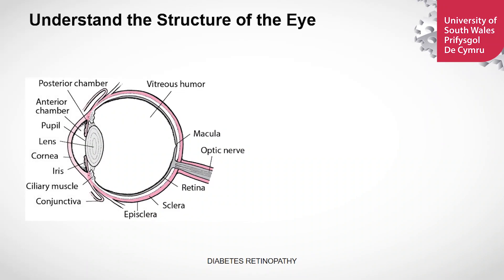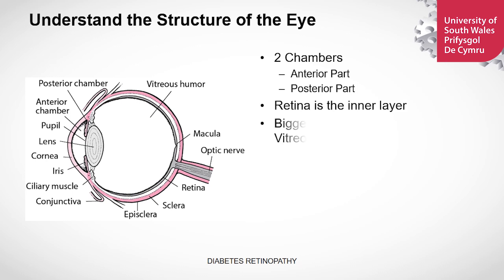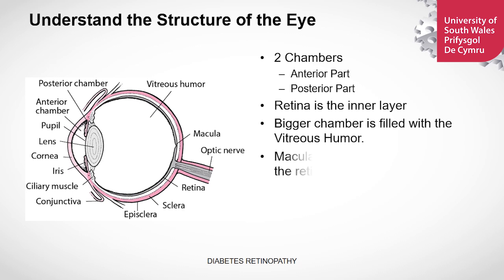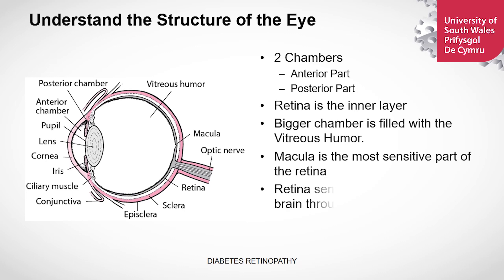First, I'll take you through the structure of the eye. The eye has two chambers: the small anterior part and the posterior part. The focus for today will be the posterior part where the retina lies, and the retina is the inner layer of the eye. As you can see, the bigger chamber is filled with a vitreous humor. Diabetic retinopathy is the disease of the retina. It contains cells that sense light. The macula, which is part of the retina, is the most sensitive part. When the retina senses light, the signals are sent to the brain through the optic nerve. This is the reason we are able to see images.